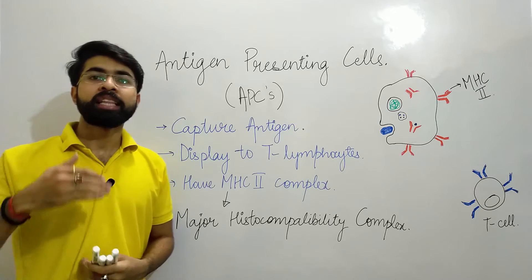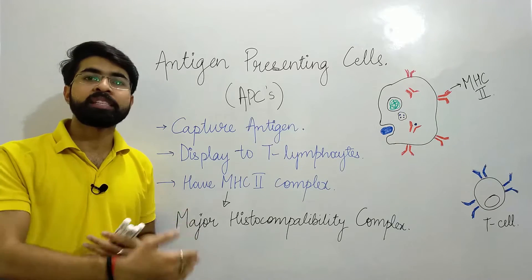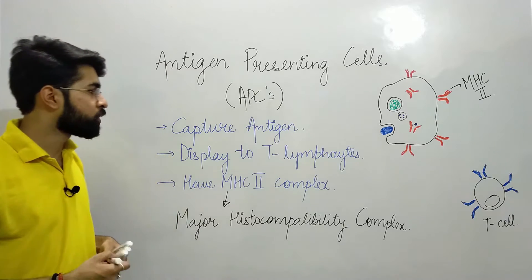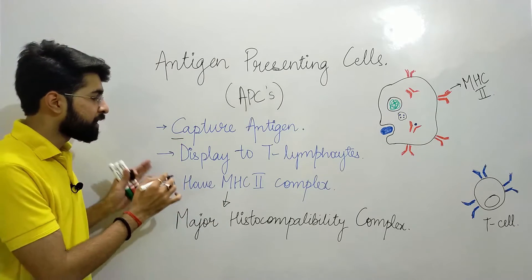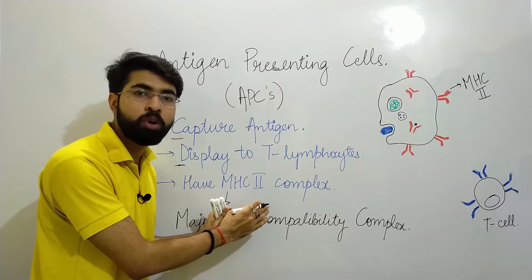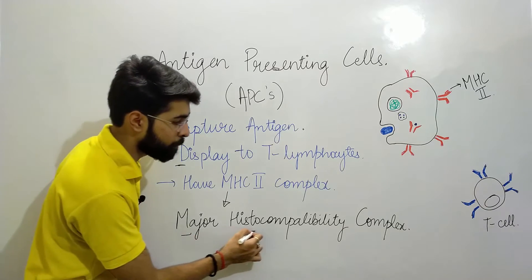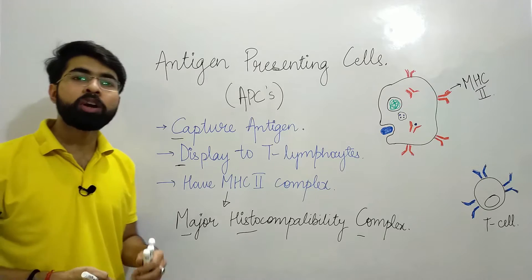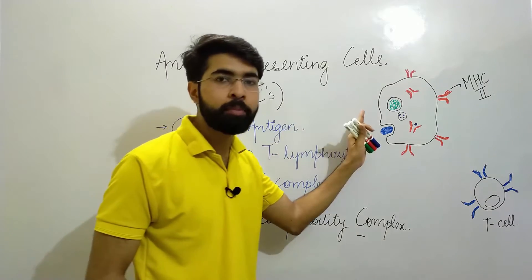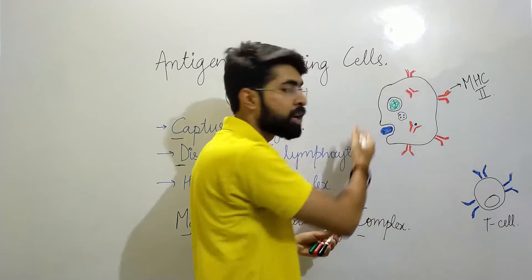What they basically do is they capture the antigen, process it within themselves, and then present it on their surface with a chemical protein complex known as the MHC. They capture the antigen and display it on their surface to T lymphocytes, using the MHC2 complex. MHC2 stands for major histocompatibility complex type 2. We will discuss MHC complexes in detail in another video, but for now I am going to show you a simple diagram of an APC.